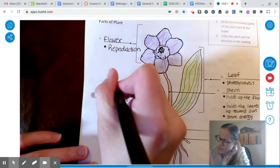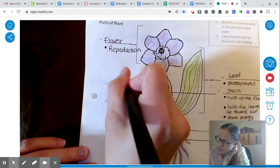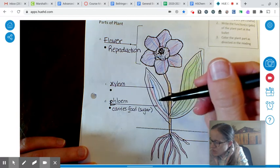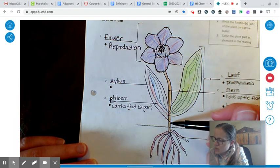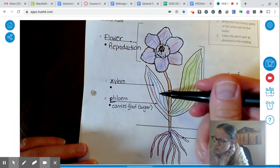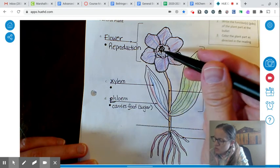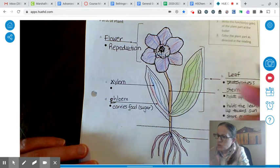And then the other one is xylem. We made it blue because it carries water. The same thing. The roots are going to draw the water up. It's going to go into the xylem. It comes into the stem. It goes through the leaves. It goes to the rest of the stem. It goes through the flower. So the xylem takes the water all throughout the whole plant.